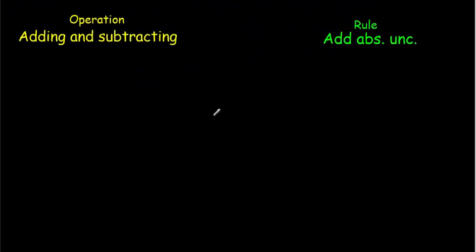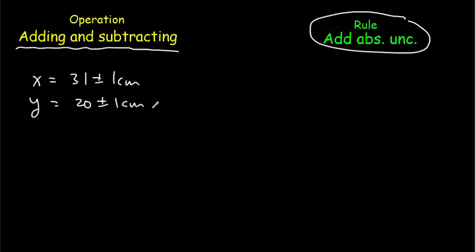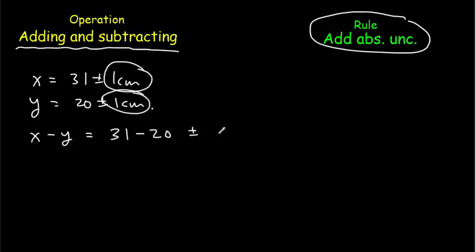Our second rule applies when you're adding or subtracting. The rule is simply to add the absolute uncertainties. So let's suppose x equals 31 plus or minus 1 centimeter and y equals 20 plus or minus 1 centimeter, and we want to calculate x minus y. The value part is 31 minus 20, and for the uncertainty we add the two absolute uncertainties: 1 plus 1 centimeter. So we get a final answer of 11 plus or minus 2 centimeters.